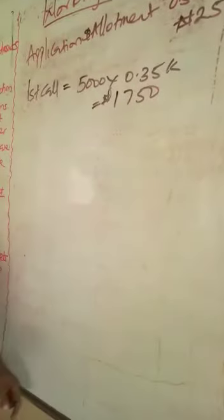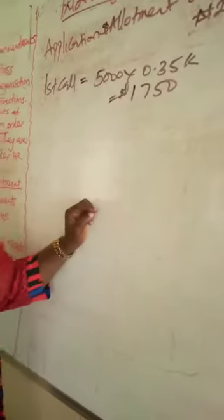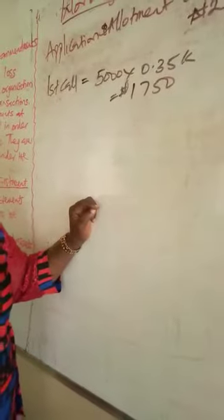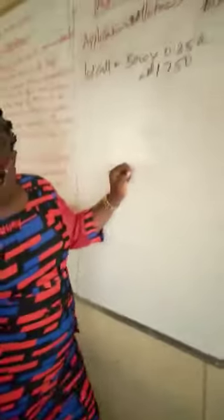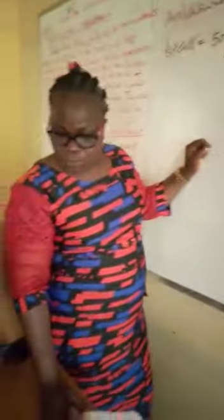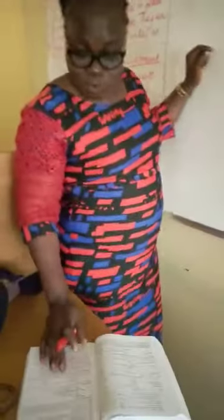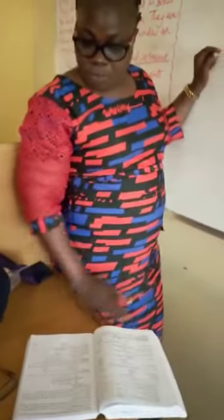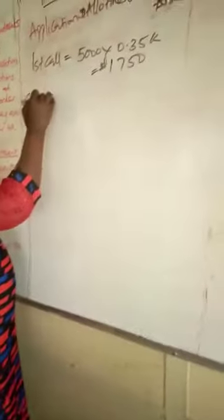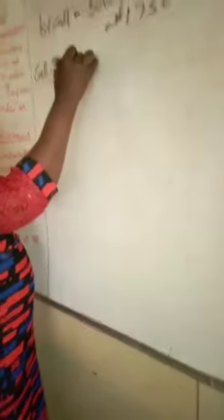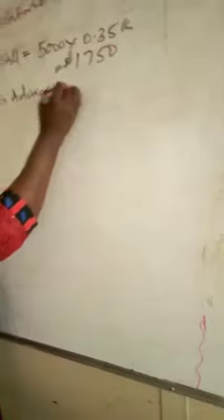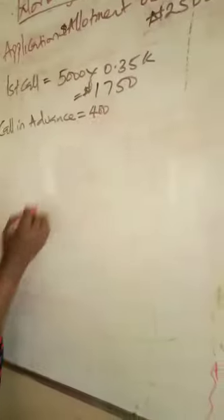For all of them. But they say a particular shareholder that holds only 400 shares decided to also pay the final call with the first call. What do we call this?